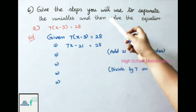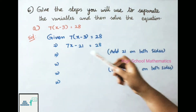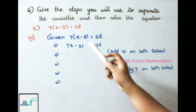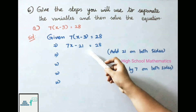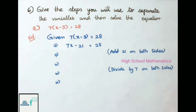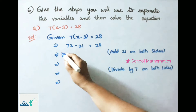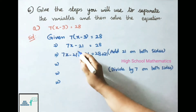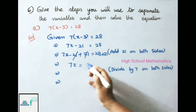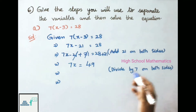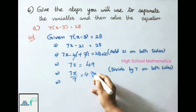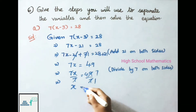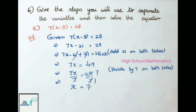Question 6: separate the variable and solve. Part A: 7(x - 3) = 28. Expanding: 7x - 21 = 28. Adding 21 on both sides: 7x = 28 + 21 = 49. Dividing by 7 on both sides: x = 49 ÷ 7 = 7. Therefore x = 7 is the solution for the given equation.